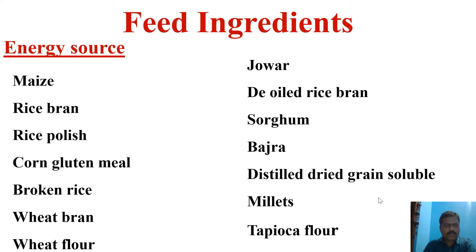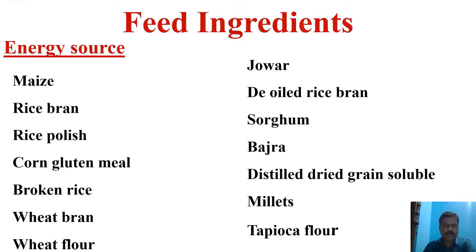This slide shows energy sources used in aqua and poultry: maize, rice bran, rice polish, corn gluten meal, broken rice, wheat bran, wheat flour, tapioca flour, millets, DDGS, bajra, sorghum, deoiled rice bran (DRB), and chokar. The inclusion level depends on anti-nutritional factors, price, availability, and source. For pelletization and starch gelatinization purposes also, the level of inclusion should vary formulation to formulation. These are commonly used ingredients for energy in aqua and poultry.